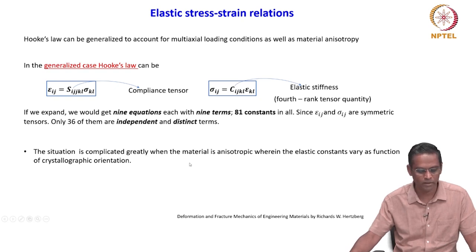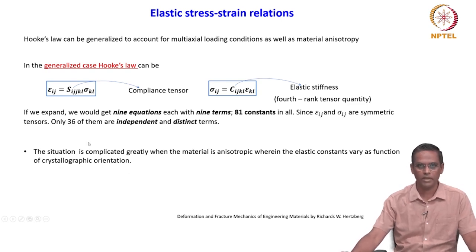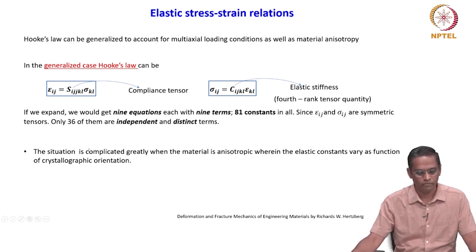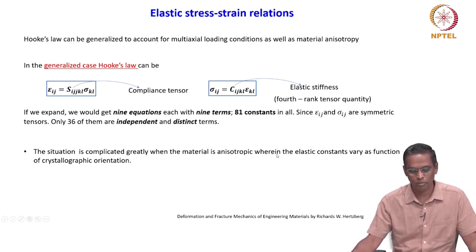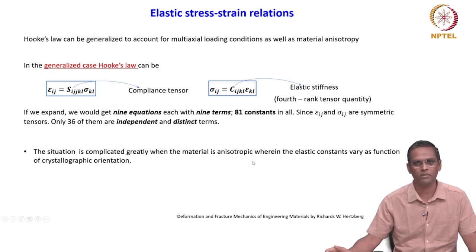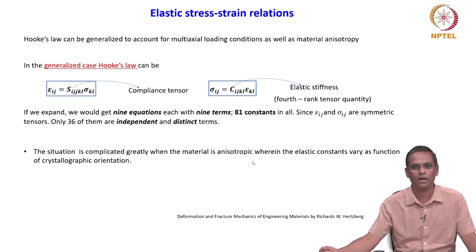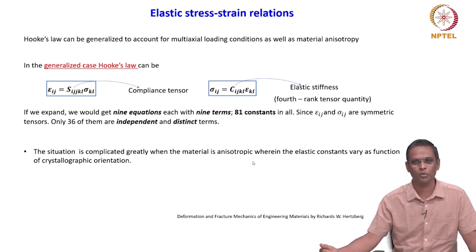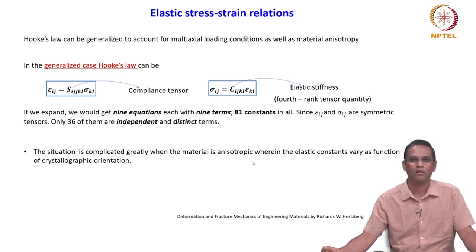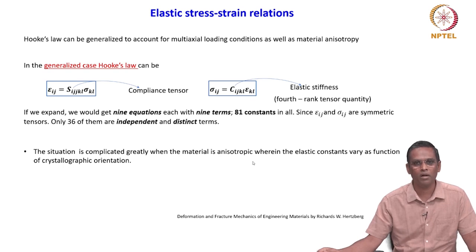All these relations are for isotropic materials. The situation is complicated greatly when the material is anisotropic, wherein the elastic constants vary as a function of crystallographic orientation. This is a very important point we have to remember. When the material exhibits anisotropic behavior, even for a cubic system, we mark different directions using Miller indices.